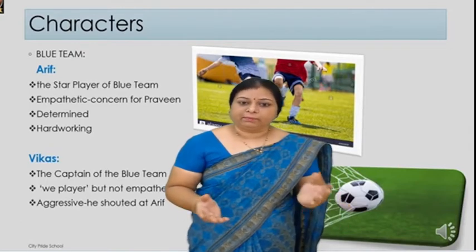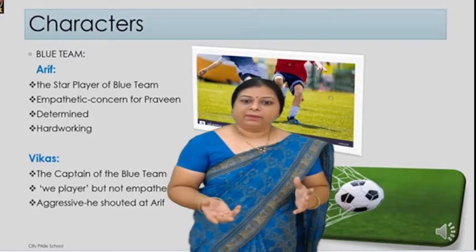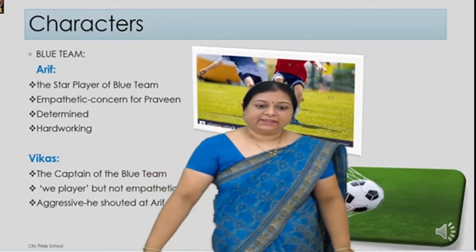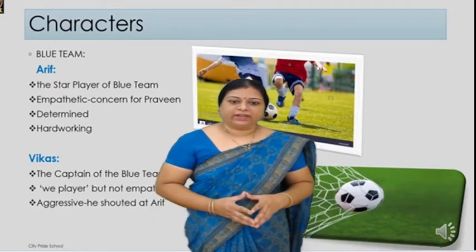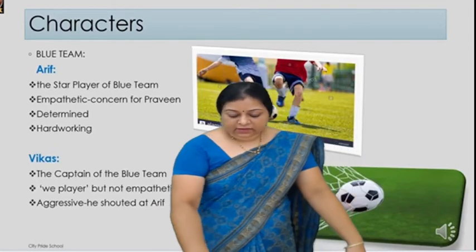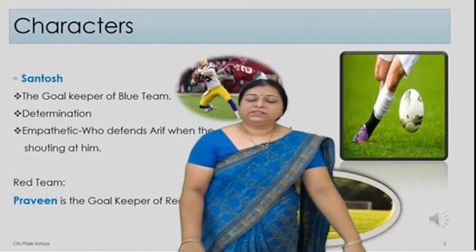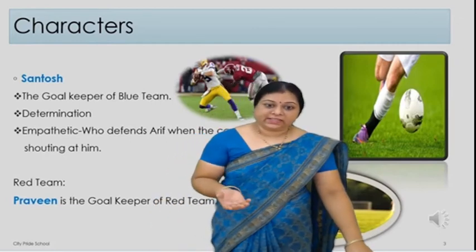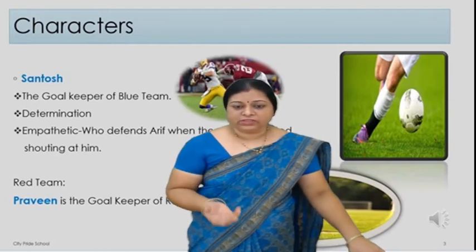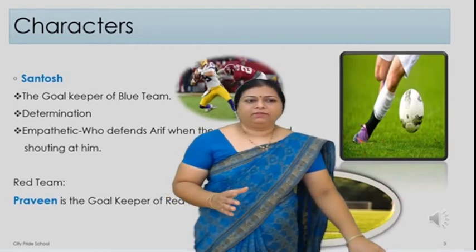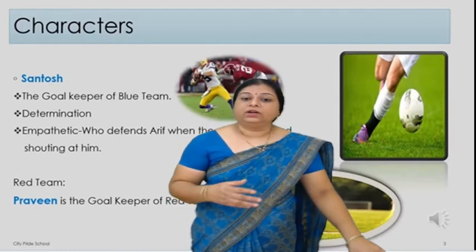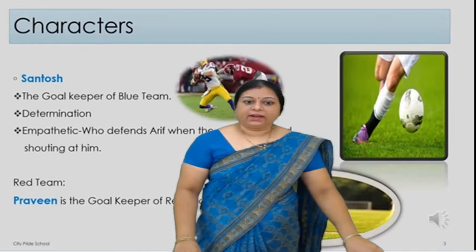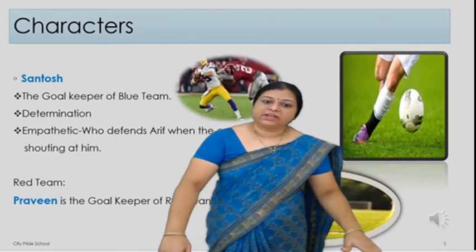Winning will go on, but still we should show sportsmanship by being kind-hearted. Another character in this story is Vikas, the captain of the blue team. He is a bit aggressive and he shouted at Arif — for what reason, all the kids will see in the lesson. Two more characters are Santosh and Praveen. Santosh is the goalkeeper of the blue team. He is very determined, but he defends Arif when the captain starts shouting at him. He supports Arif because he knows that winning is not important — helping each other, learning the ethics and values from the game, and showing sportsmanship — that is important.